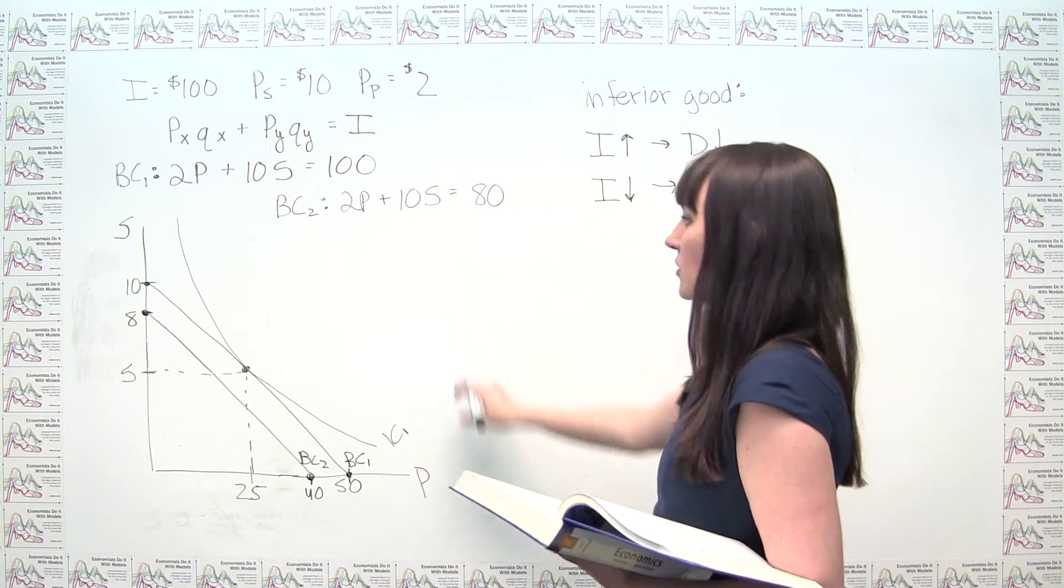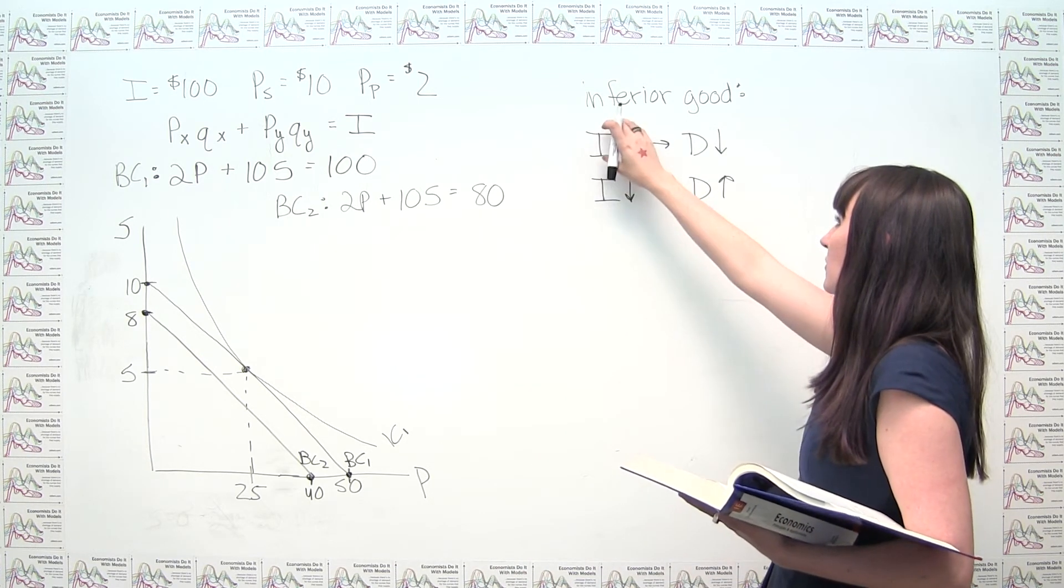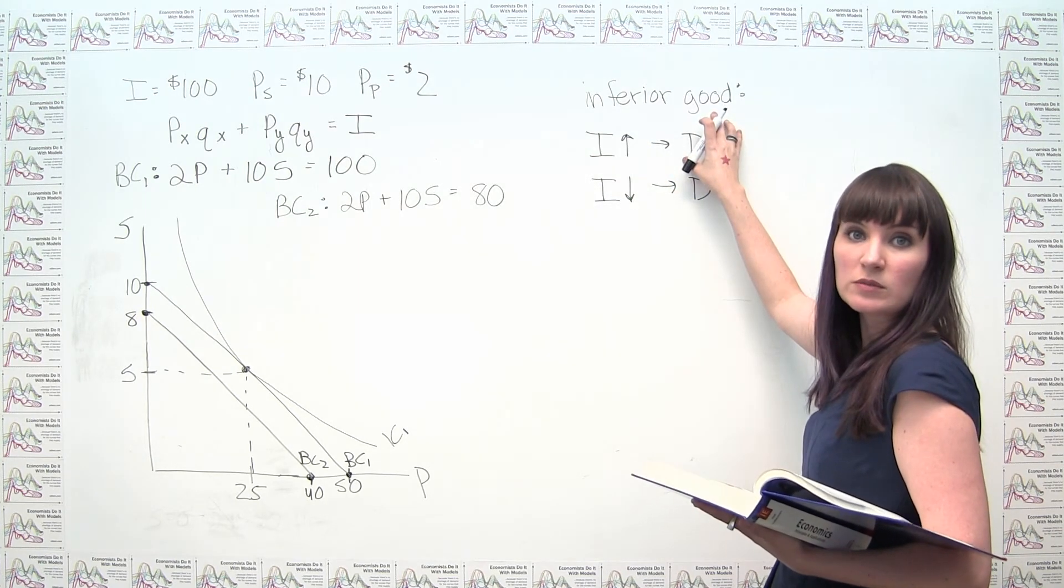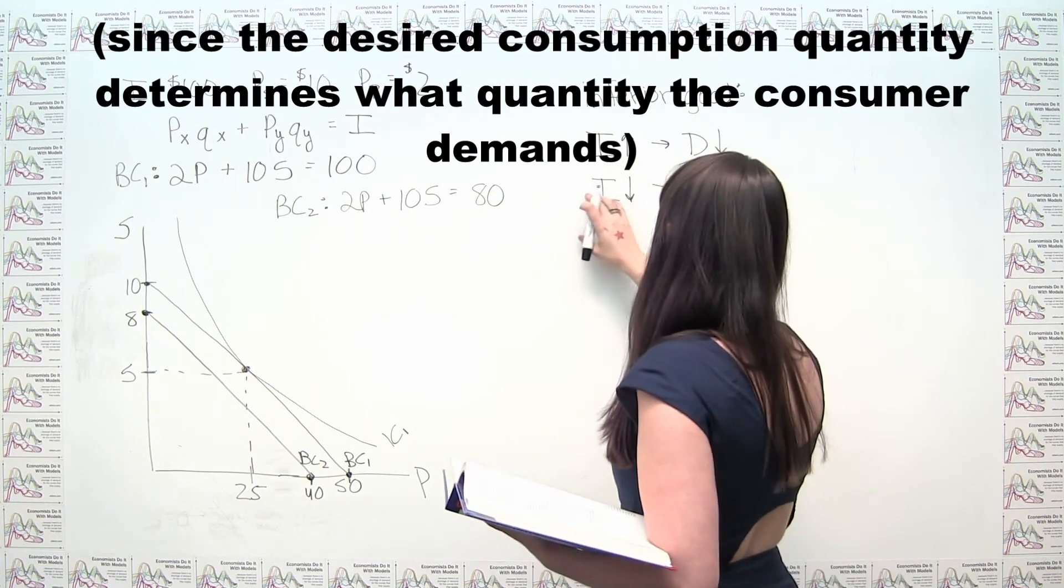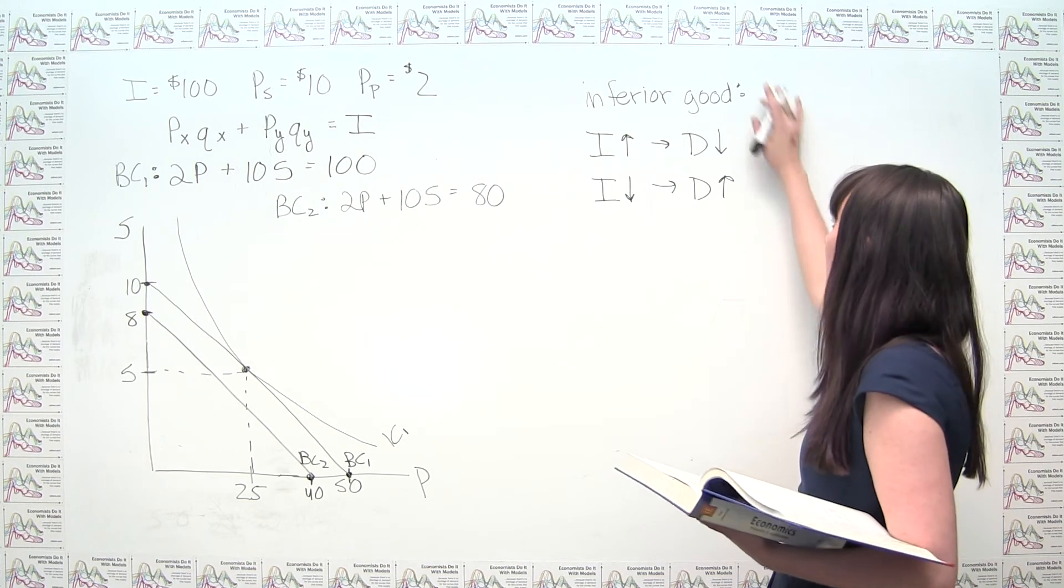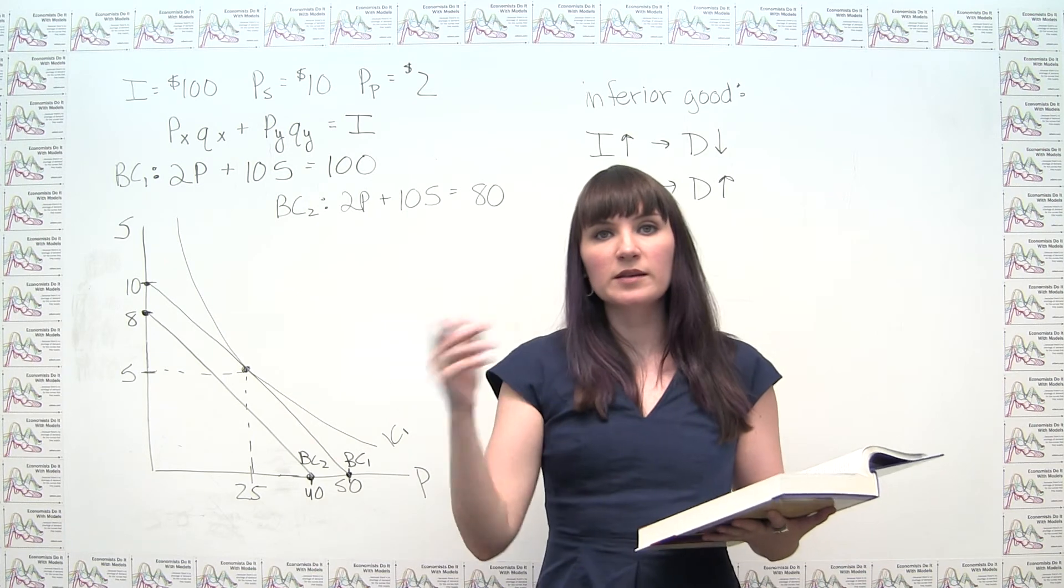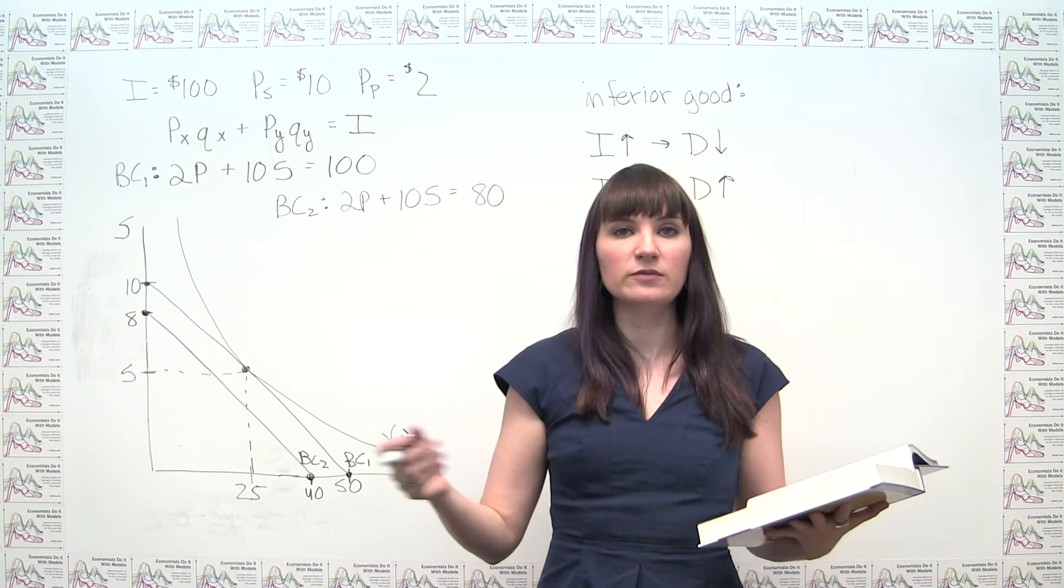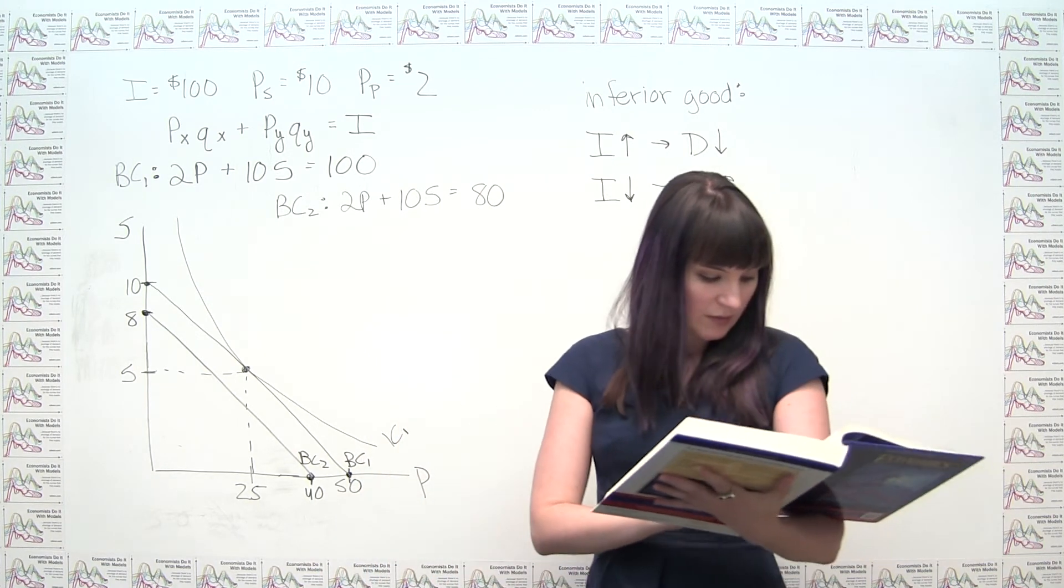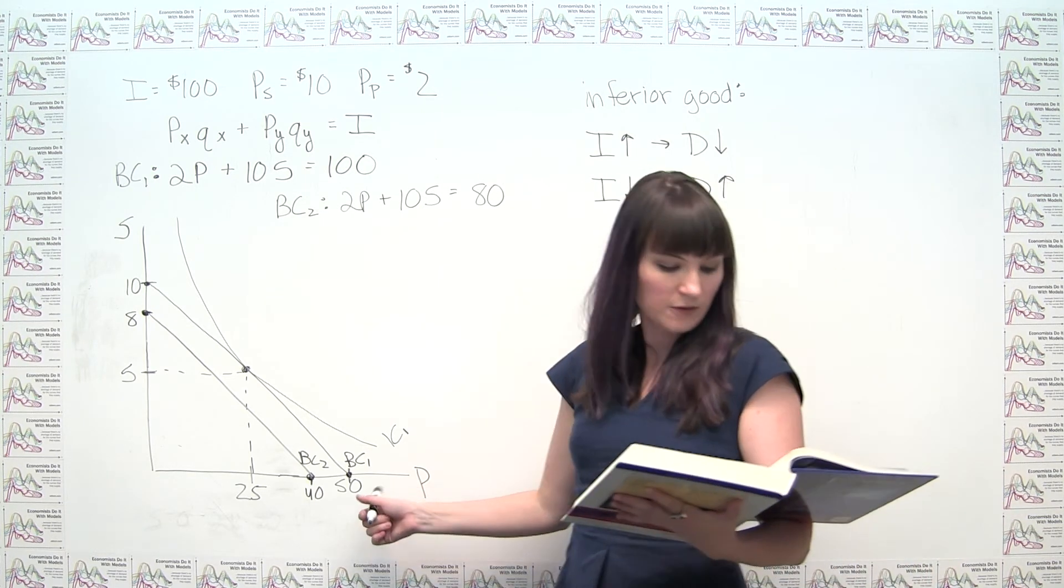Now, when we're thinking about our consumer choice model here, we can interpret this as inferior goods when you have an increase in income that's going to be a decrease in quantity consumed. And here, when you have a decrease in income, you're going to have an increase in quantity consumed. And you can compare this to a normal good, and normal goods are the goods where income and quantity consumed or income and demand move in the same direction rather than in opposite directions. So we're told here that it's the potatoes that are an inferior good.